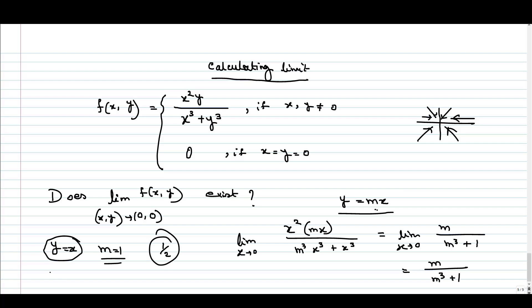When we are approaching via y = 0, that is via the x-axis, with m = 0, our limiting value is 0. So for different values of m, we will get different limiting values, that's why the limit does not exist.